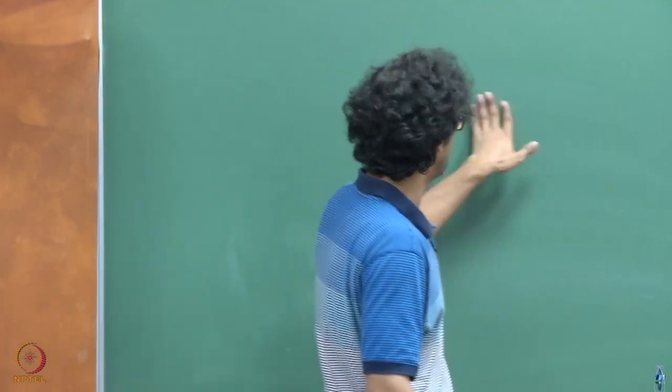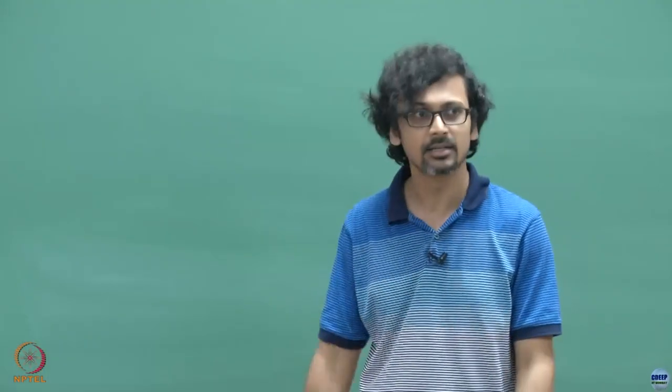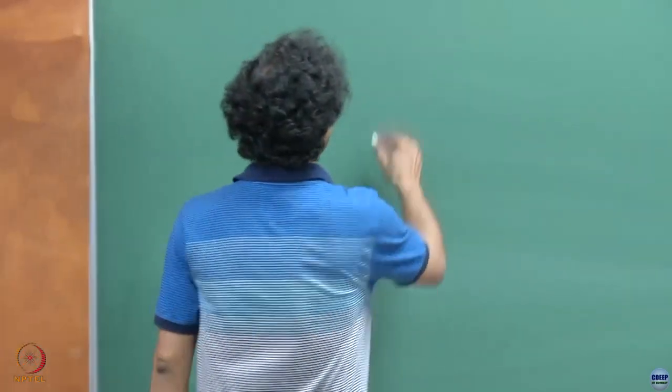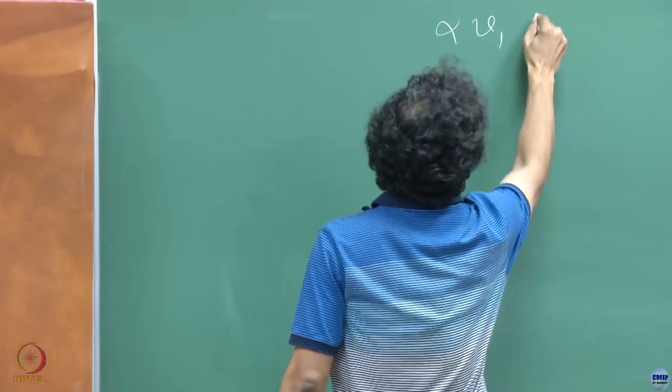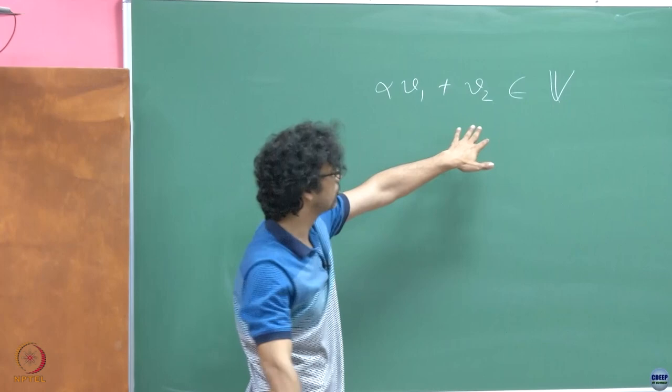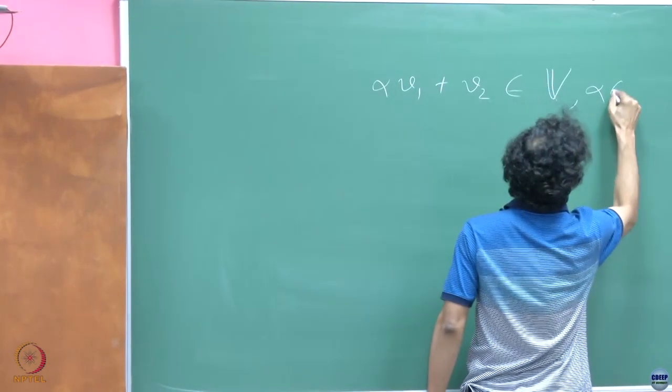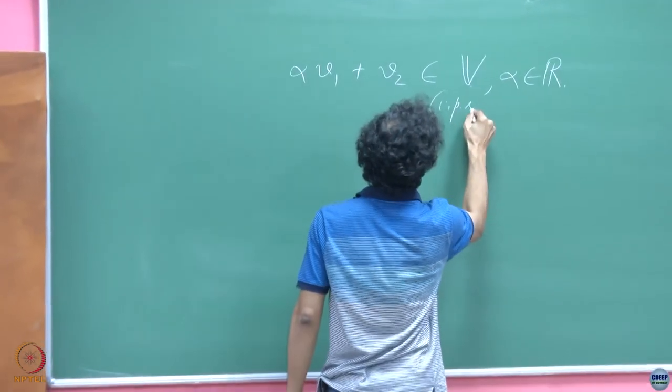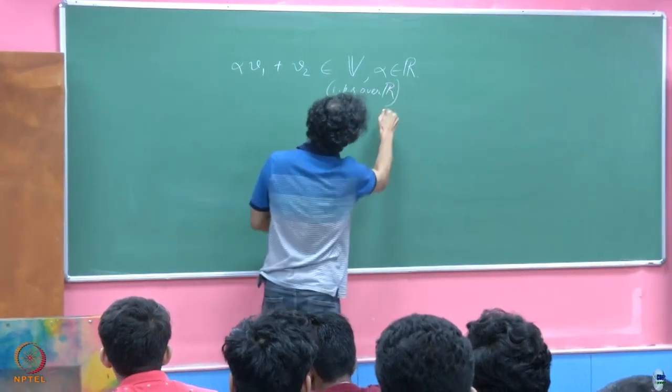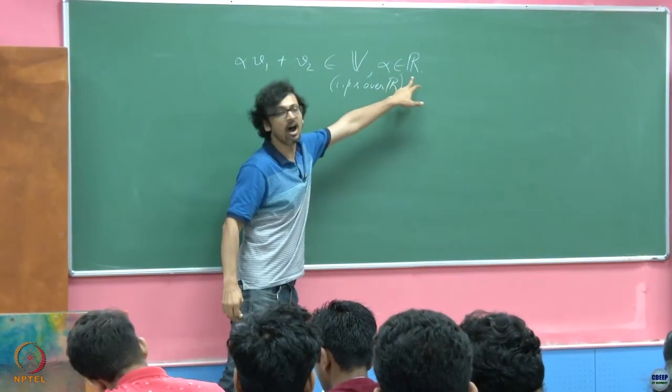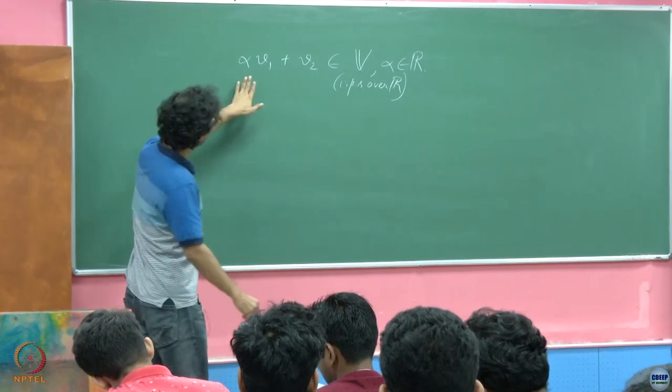Now there's an interesting little derivative of that result which is if you're dealing with just real field there is another alternate proof of this Cauchy-Schwarz inequality. I'll just sketch that proof. You just take alpha V1 plus V2. Of course V1 and V2 belong to this inner product space over R. Let's look at this object.